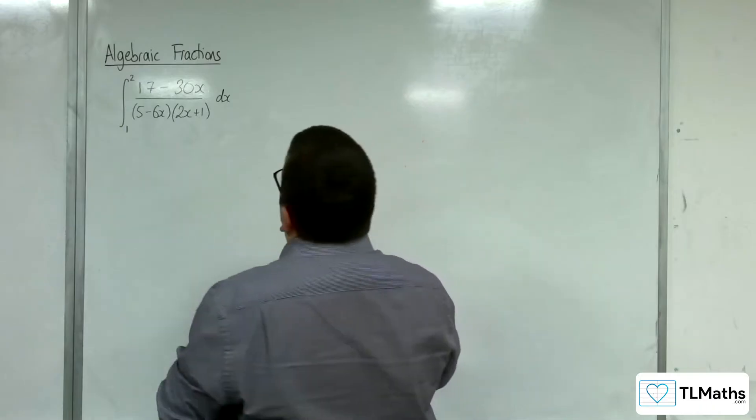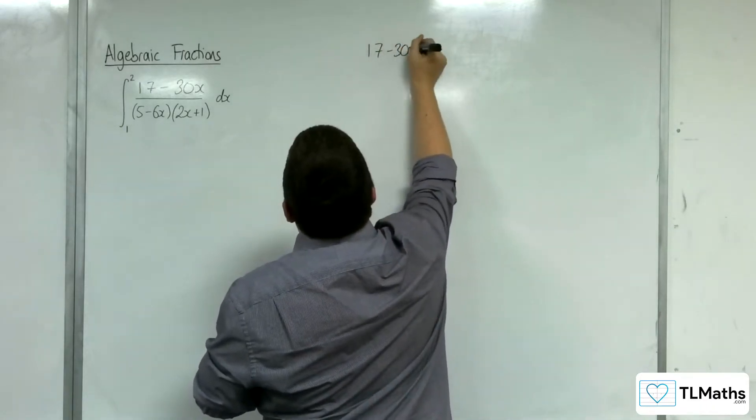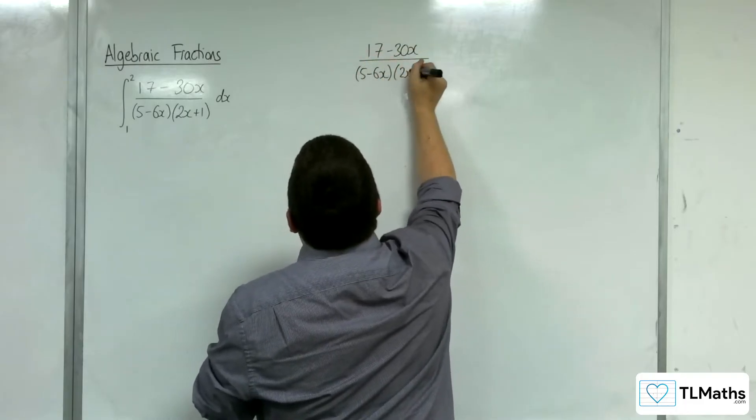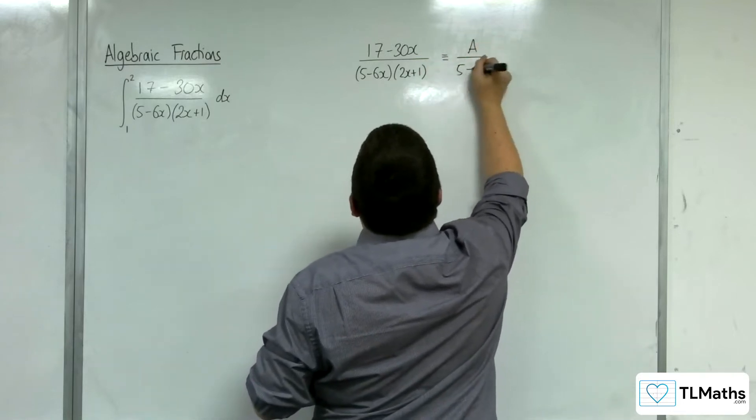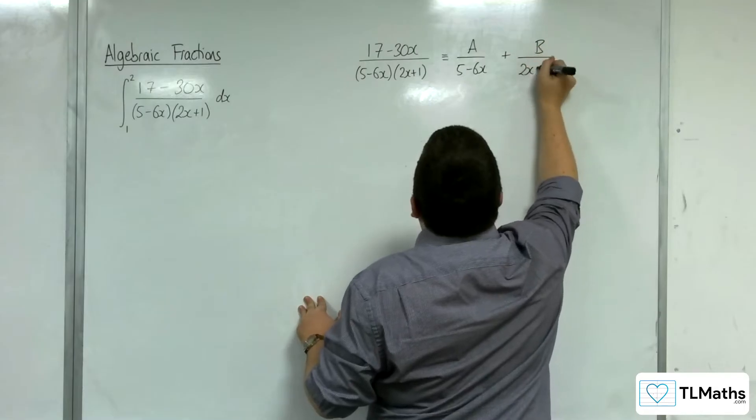So what we're going to do is we are going to break this fraction apart. 5 take 6x over 2x plus 1. And that's going to be equivalent to a over 5 take 6x plus b over 2x plus 1.